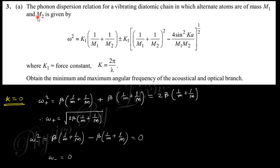Next is the phonon dispersion relation for a vibrating diatomic chain, given like that. This is the dispersion relation of a diatomic chain, where two mass particles are arranged in periodic nature. The dispersion relation between frequency and wave number is known as the dispersion relation.